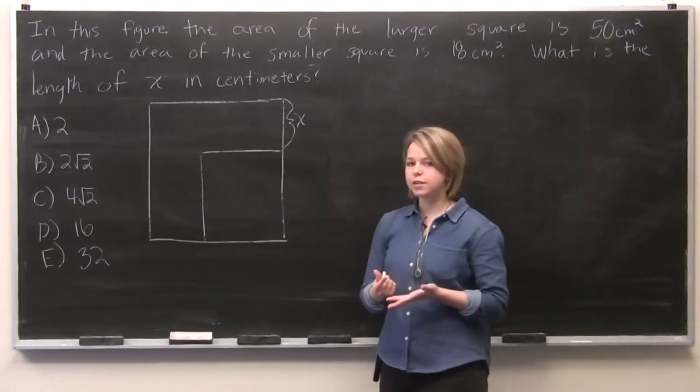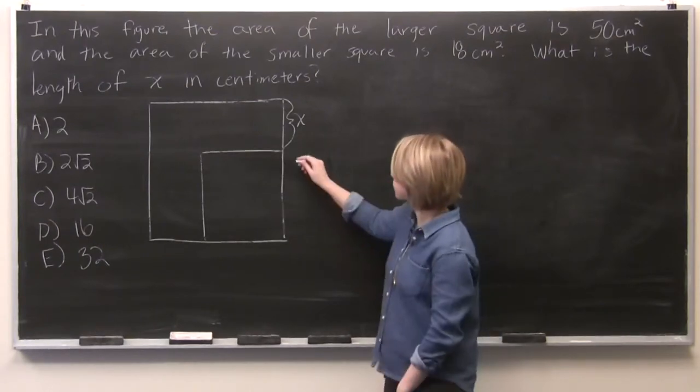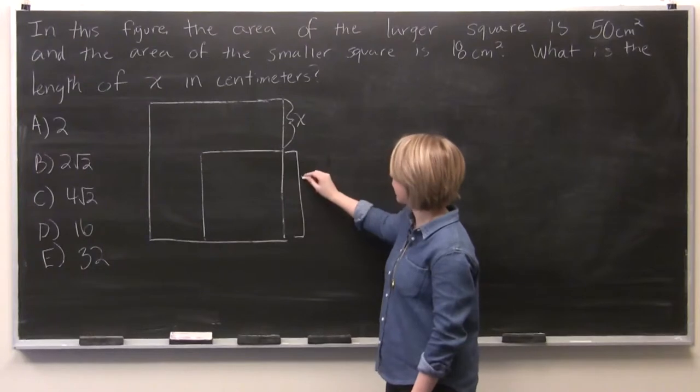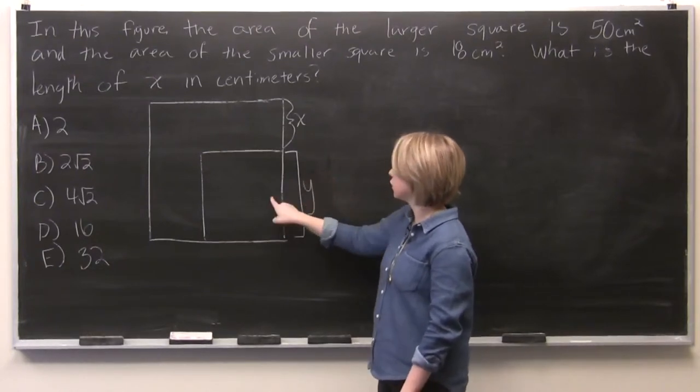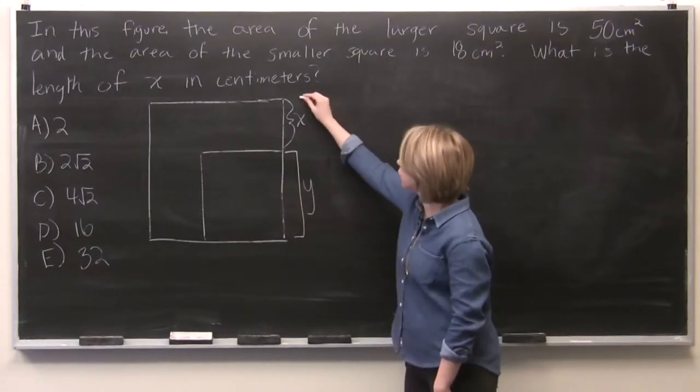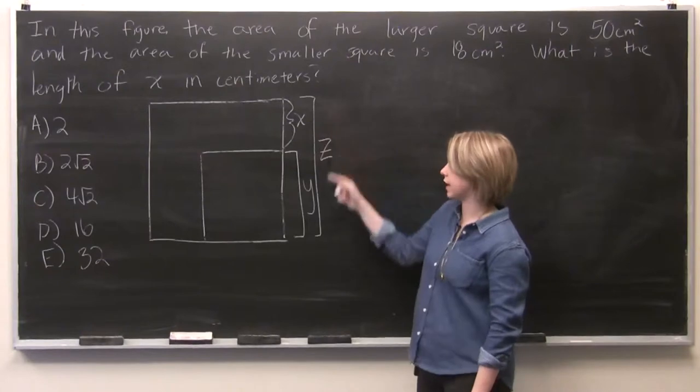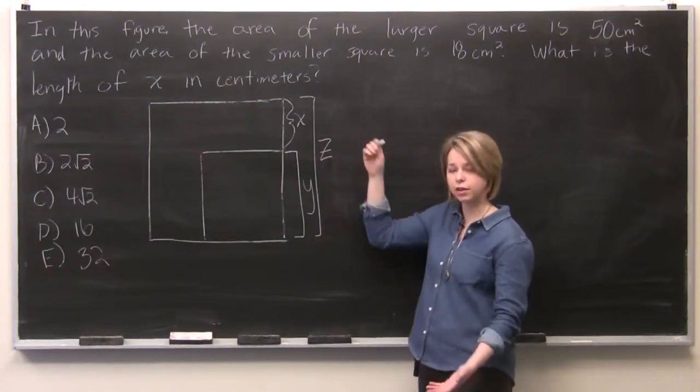So in order to solve this, we are going to actually add two more variables. We'll add a y here to be the side of the smaller square. And we'll add a z as the length of the side of the larger square.